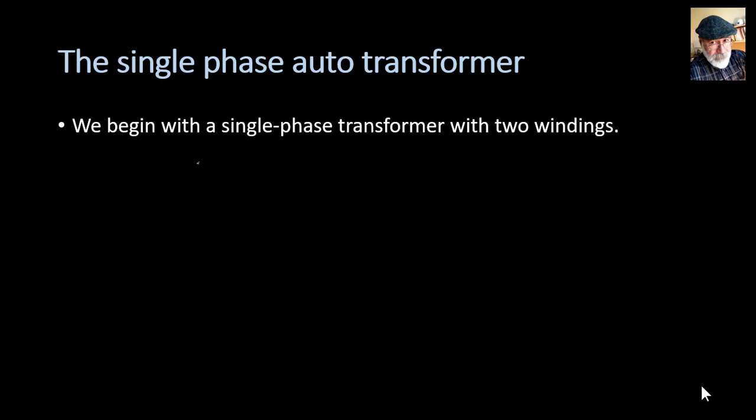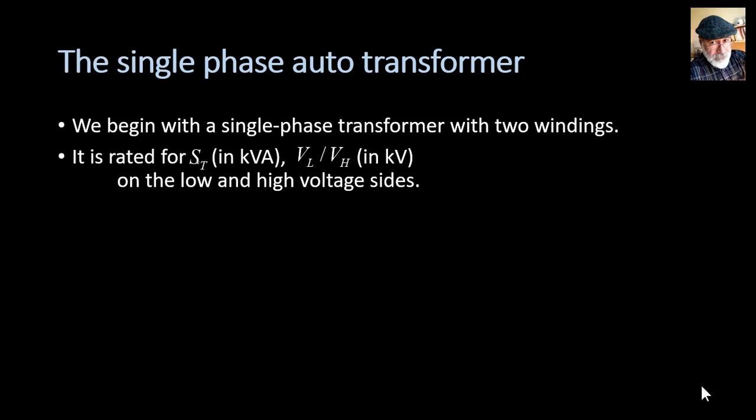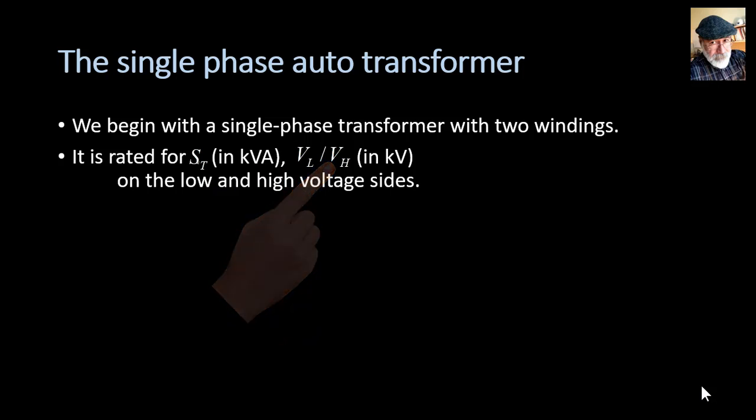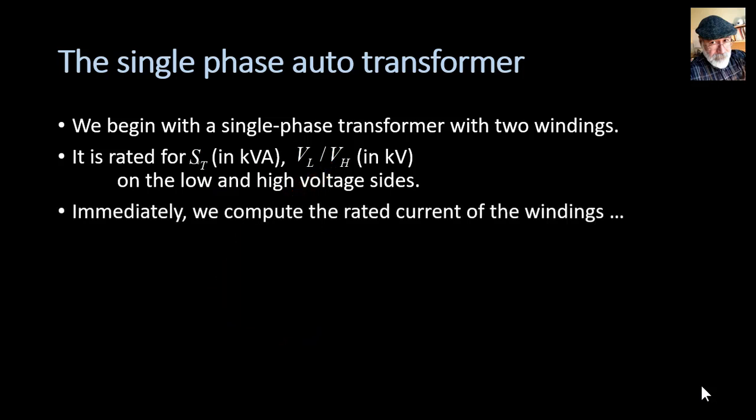We begin with a single phase transformer with two windings and we know the power rating ST, the voltage ratings of the low side VL and the high side VH, and with those three data we can compute the rated currents in the windings dividing the rated power by the rated voltage of each side.